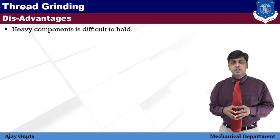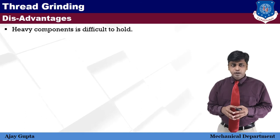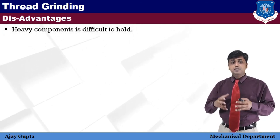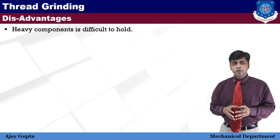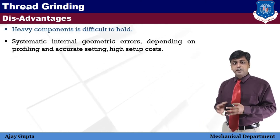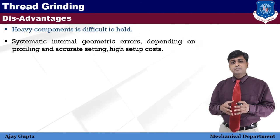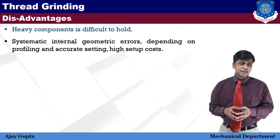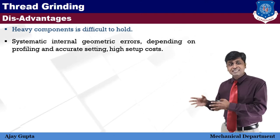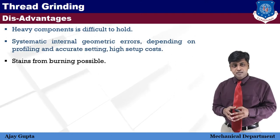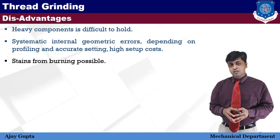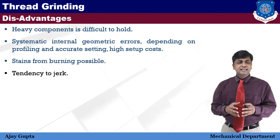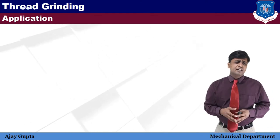The major disadvantage of thread grinding is that heavy components are difficult to hold, and special fixtures are required to support them. Another disadvantage is systematic internal geometric error depending on profile and accurate setting, as well as high setup cost. Additional drawbacks include traces of jerking or strains from the possibility of burning, and a general tendency to chatter.